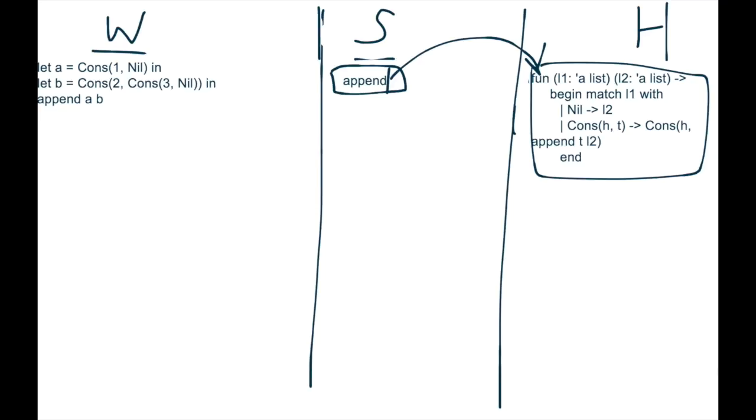And we have it point to its value in the heap. Now we can take it off the workspace. Now we can keep chugging along. Notice we did the exact same thing with append that we've been doing so far. We have the let declaration, and then we push the binding to the stack pointing to its value on the heap.